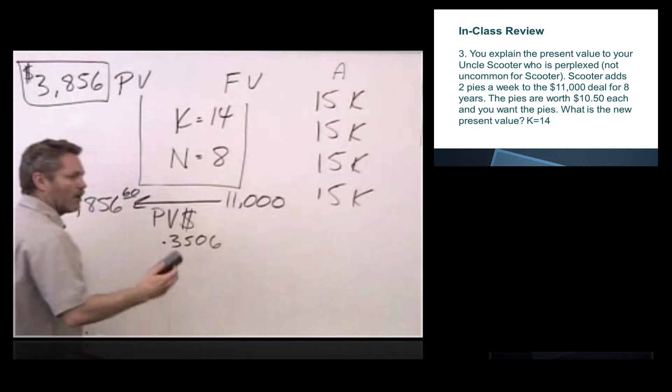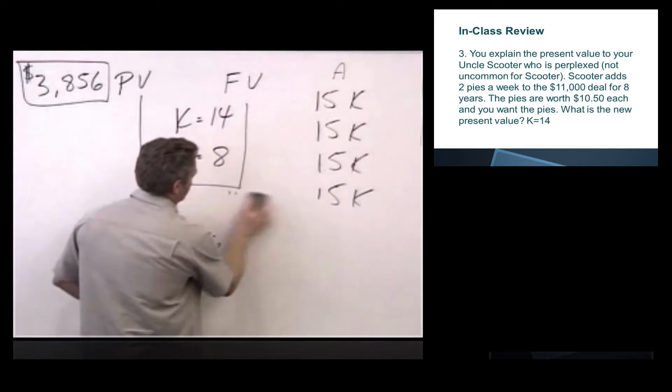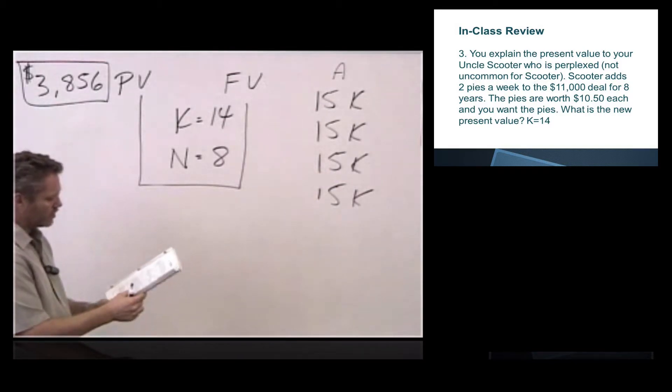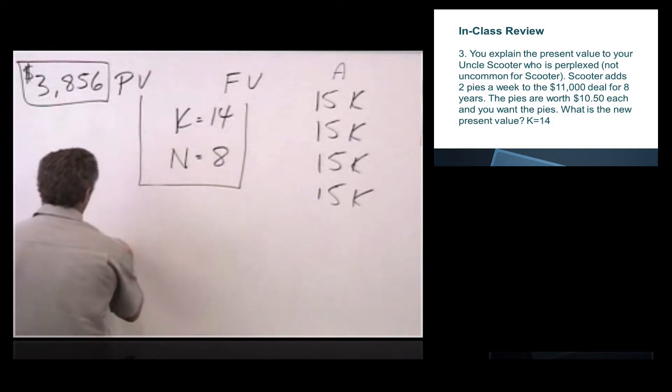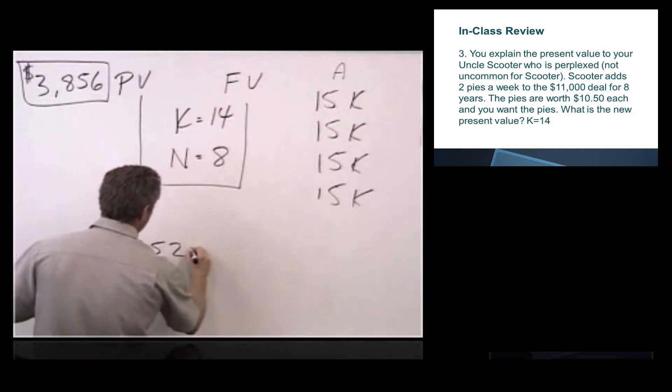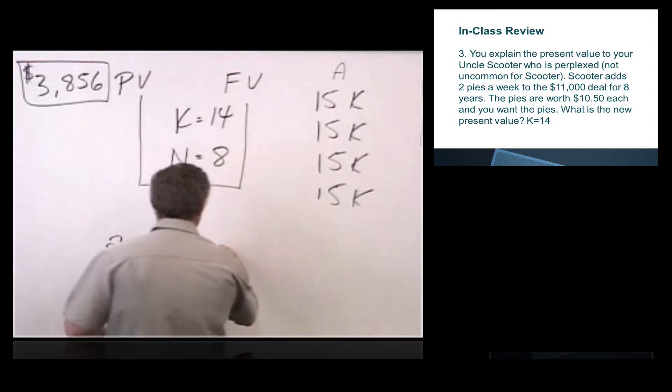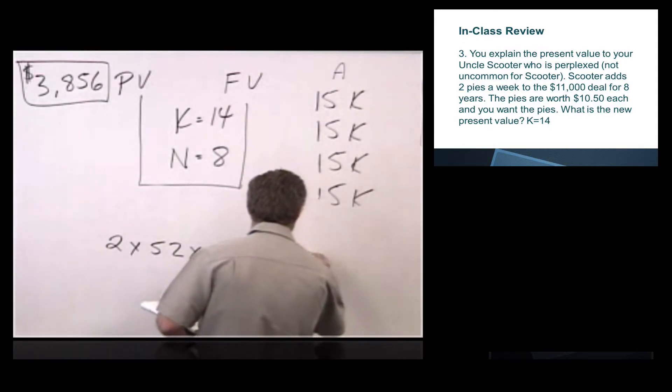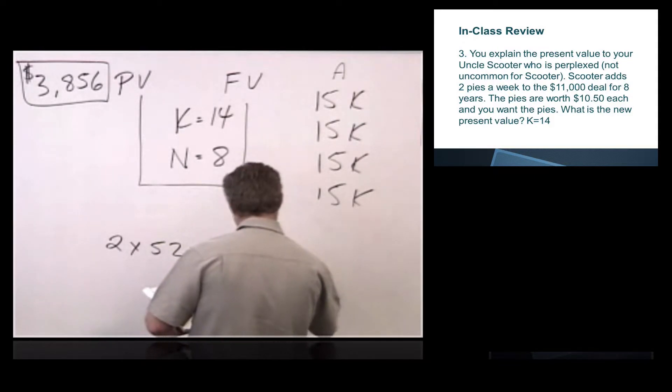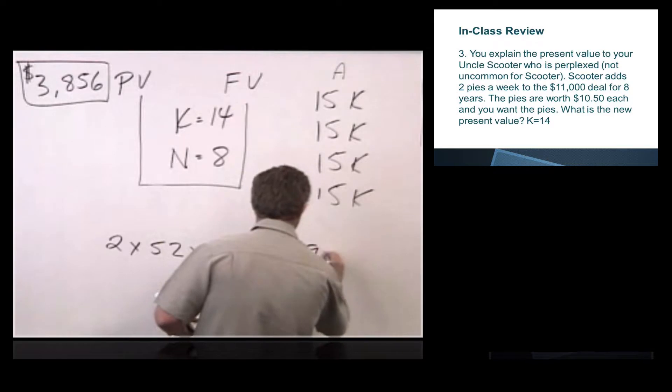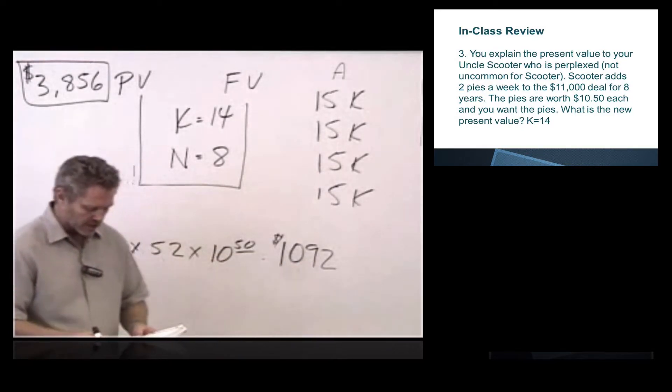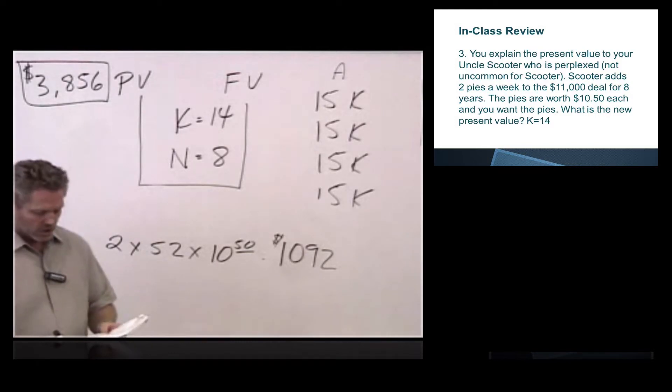Well, first, he's adding the value. So we have this $11,000 deal that's worth $3,856. Now we've got to figure out how much these pies are worth. The first thing that we're going to do is take two pies a week times 52 weeks times $10.50. All right, so Uncle Scooter says he's going to give us basically $1,092 worth of pies. He's going to give them to us each week. And so this is basically an annuity of pies.